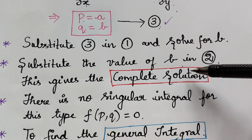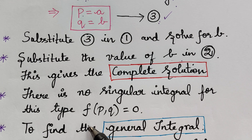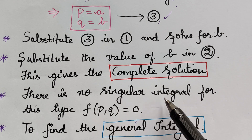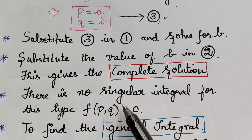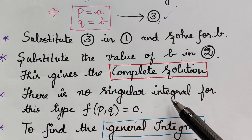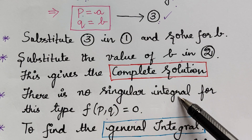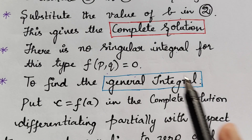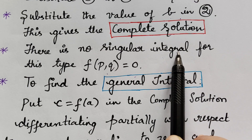And for sure, there will be no singular integral for this type of equation. I will tell you the reason for it when solving the problem. We have to find the singular integral for the remaining types of the problem, but for this type f of p, q is equal to 0, there is no singular integral, as will also be observed if you try to find it.